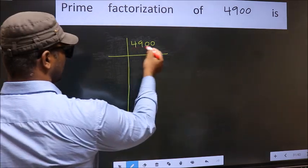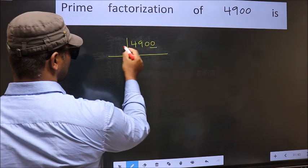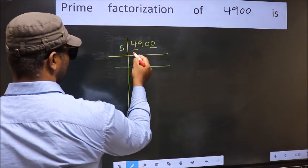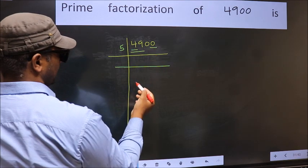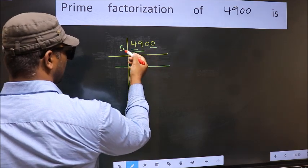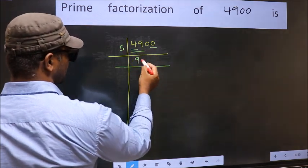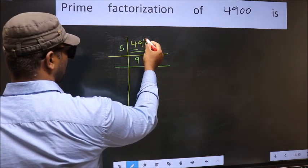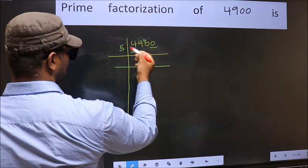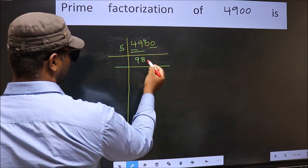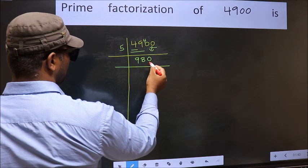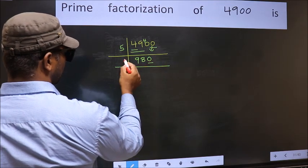In this number, the last digit is 0, so take 5. First number 4 is smaller than 5, so take 2 numbers: 49. A number close to 49 in the 5 table is 5 nines, 45. 49 minus 45 is 4, carried forward: 40. When do we get 40 in the 5 table? 5 times 8 is 40. Bring this 0 down. Now the last digit is 0, so take 5.